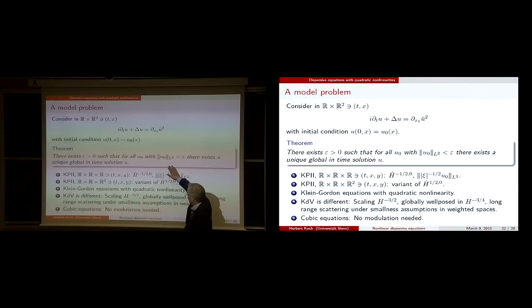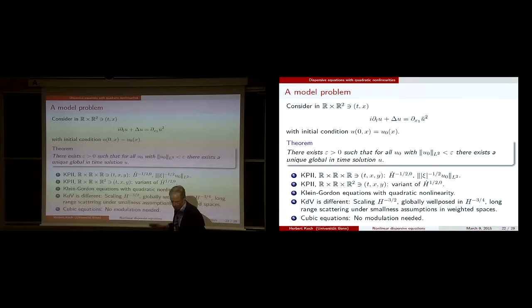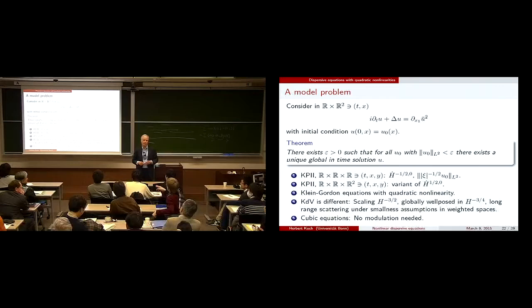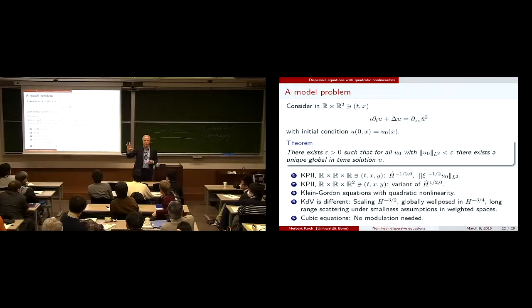For KP2 — the equation I presented — this was the first example where my knowledge shows this procedure has been worked out. There's a minus half derivative on the initial data in L^2 with respect to x. It also works for one dimension higher; the same works for Klein-Gordon equations with quadratic nonlinearity. The rough structure generalizes to these cases, though you have to take different expressions to be scale-invariant.